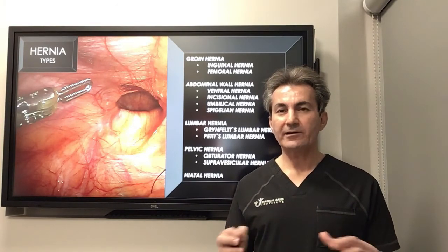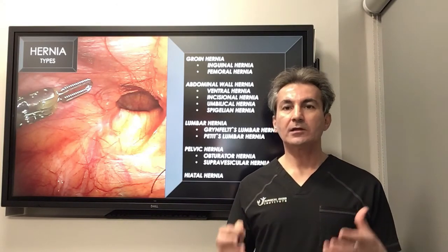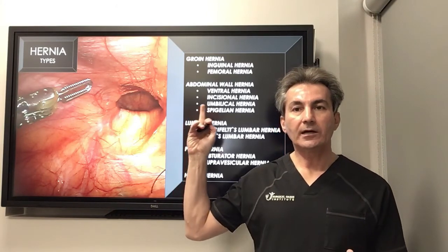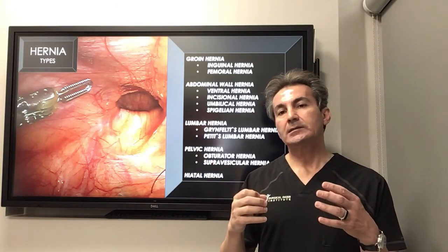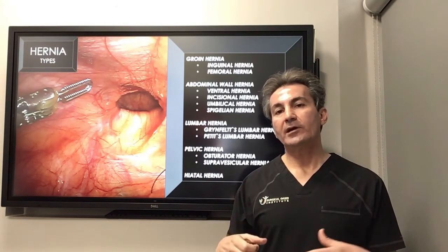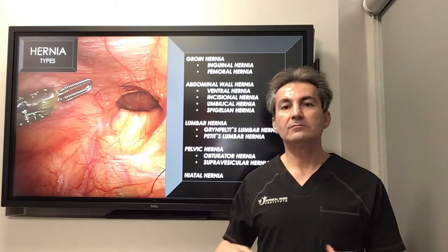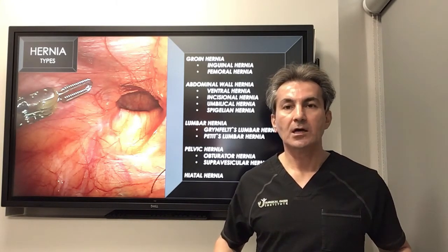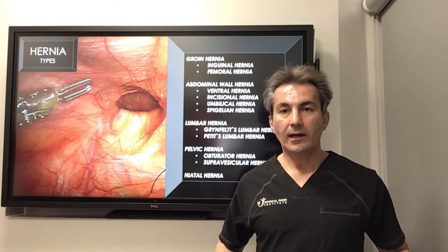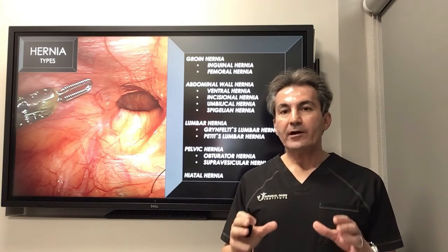We also have a very rare type of hernia called a Spigelian hernia, which is a type of hernia that happens between the layers of the muscles, mostly in the left or right lower abdomen.